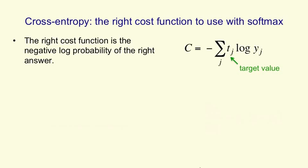That is, we want to maximize the log probability of getting the answer right. So if one of the target values is a 1 and the remaining ones are 0, then we simply sum over all possible answers.